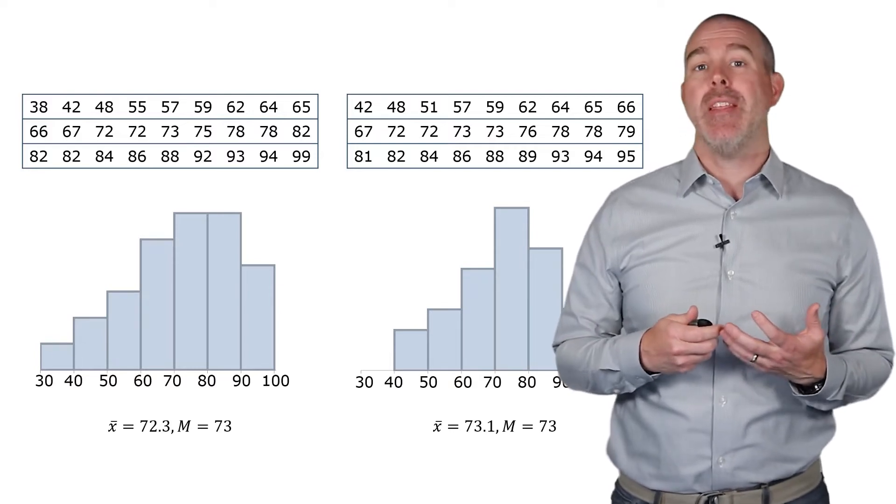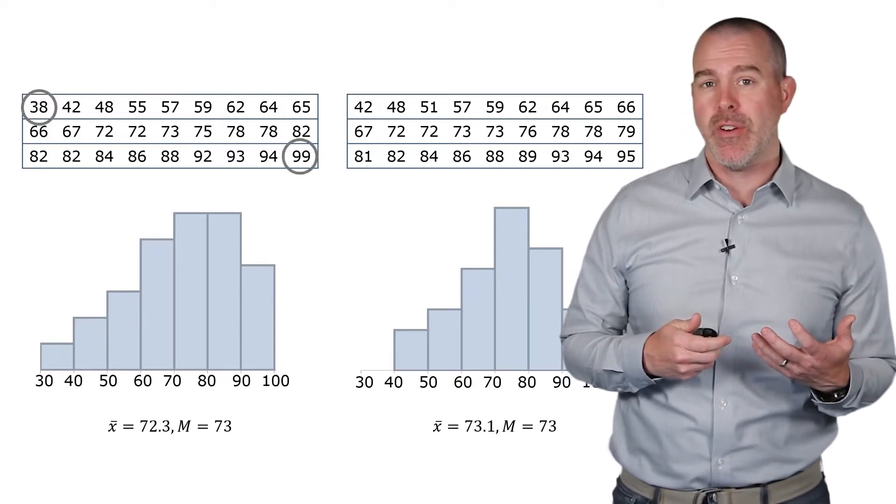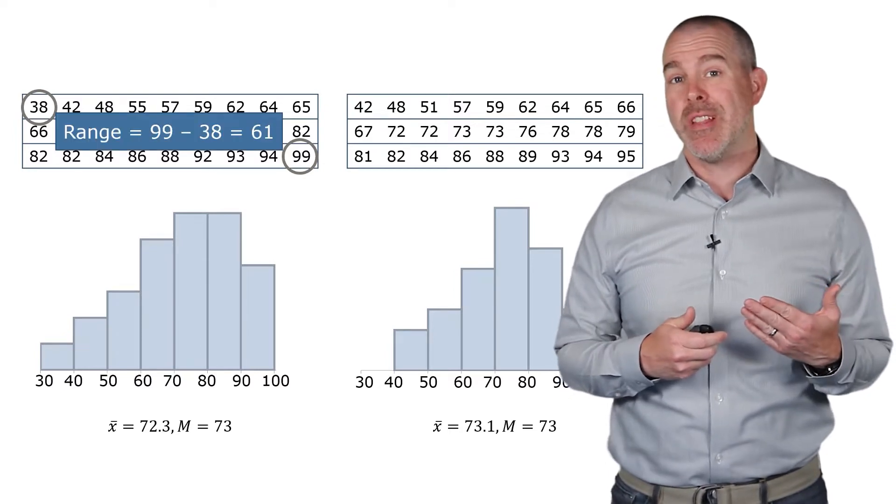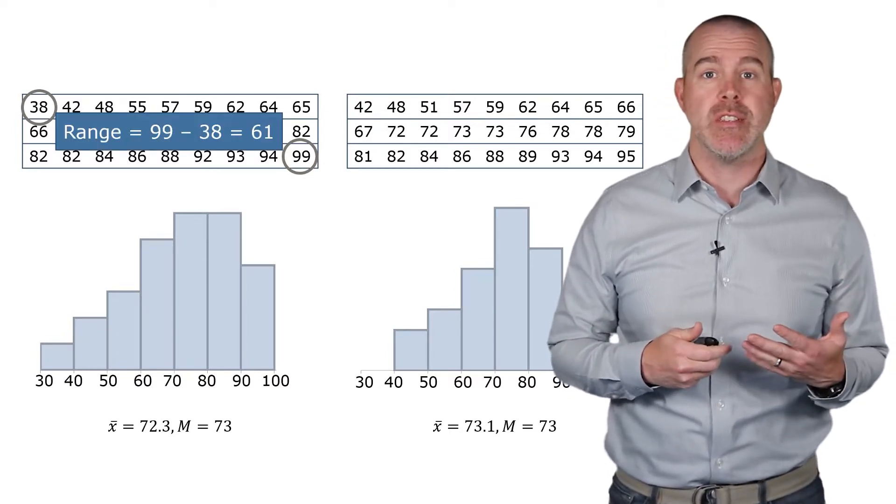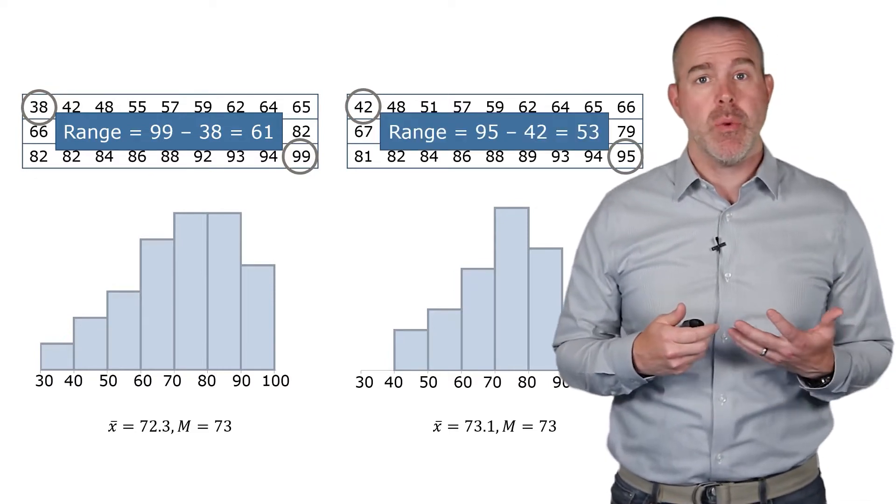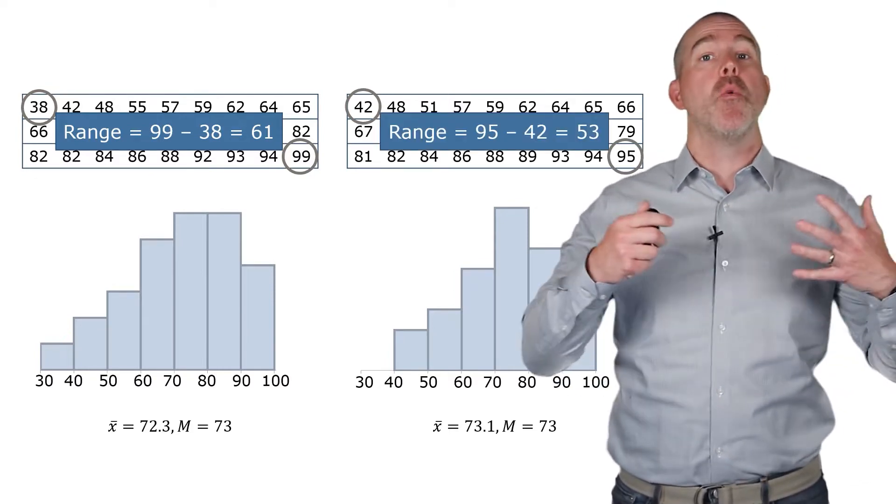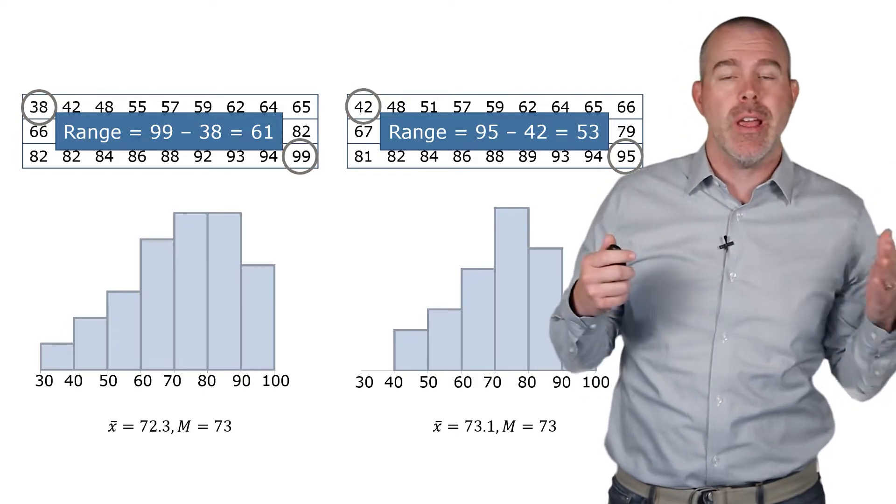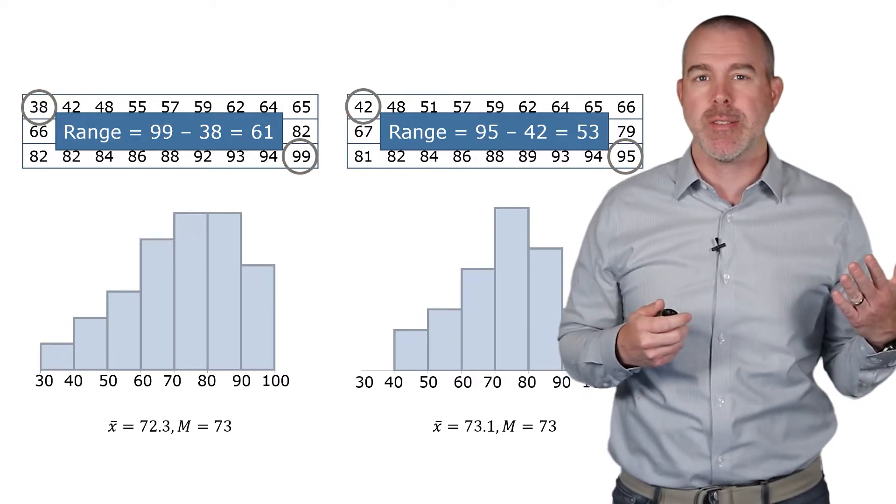But if we look at the minimum and maximum on the first one, 38 to 99, the difference there is called the range, it's 61. Whereas with the second one, the range there is 53. So we can say that the first set is more spread out because it has a broader difference between the minimum and maximum.